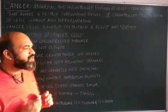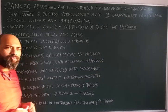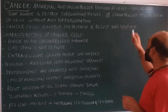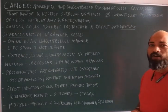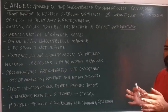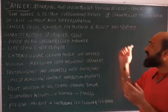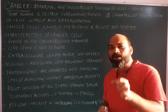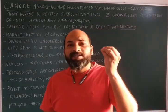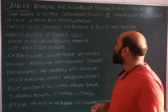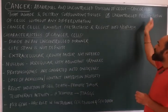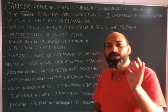What is cancer? Cancer is generally defined as an abnormal and uncontrolled proliferation or division of cells, which results in the formation of a tumor. These abnormal cells invade and destroy surrounding or neighboring tissues, suppressing or inhibiting their activity. Cancer can also be defined as uncontrolled proliferation of cells without any differentiation.